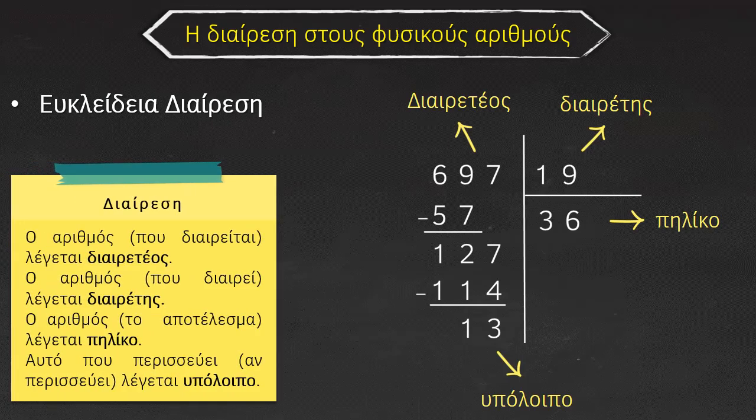Έτσι έχουμε τον διαιρετέο, δηλαδή τον αριθμό που διαιρείται, τον διαιρέτη, τον αριθμό που διαιρεί, το πηλίκο, που είναι το αποτέλεσμα, και το υπόλοιπο, αυτό που περισσεύει αν περισσεύει.